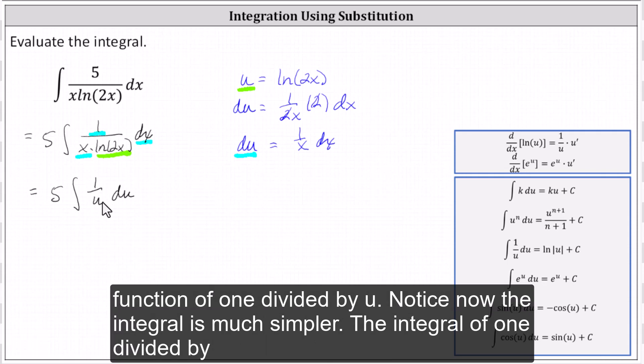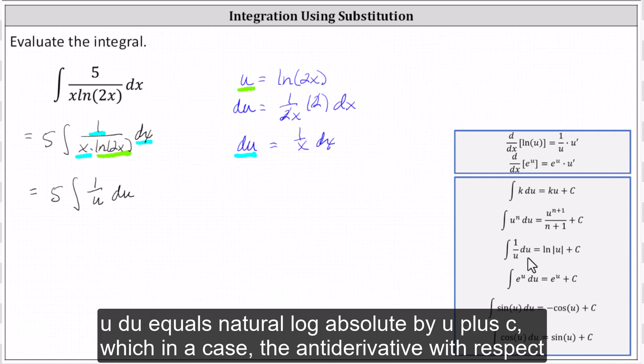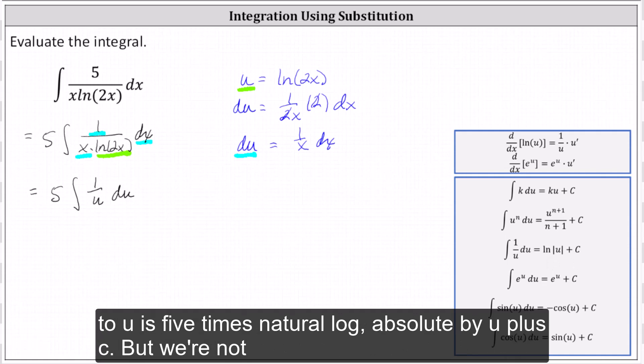Notice now the integral is much simpler. The integral of one divided by u du equals natural log absolute value of u plus c, which indicates the antiderivative with respect to u is five times natural log absolute value of u plus c.